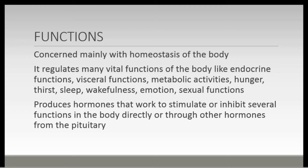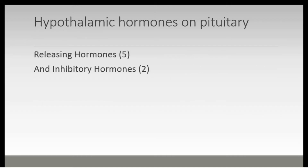The hypothalamus also produces hormones that work to stimulate or inhibit several functions of the body, either directly to the target tissues or through hormones from the pituitary. The hypothalamus produces seven hormones that go to control the pituitary, and these include five releasing hormones and two inhibitory hormones.